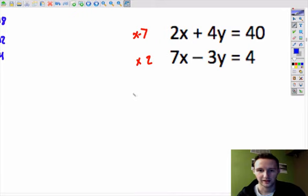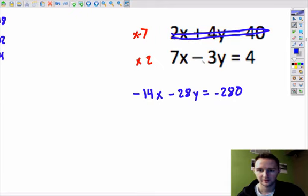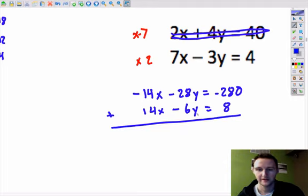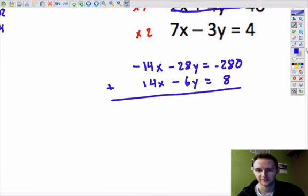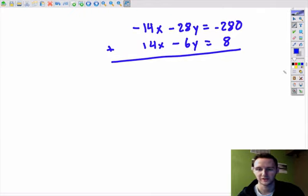That leaves us with negative 14x minus 28y equals 7 times 4 is 28, negative 280. That one is now gone. This one, multiply both by 2, we get 14x minus 6y equals 8. Now, add the two together. That's all the new stuff that we have for this learning target. All right? The only thing that's left is to kind of finish solving this with just the algebra steps that you know from before.